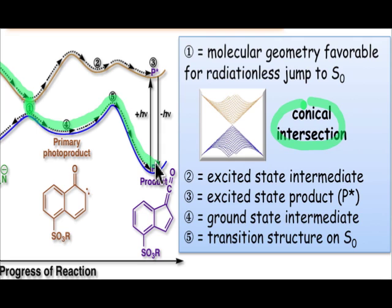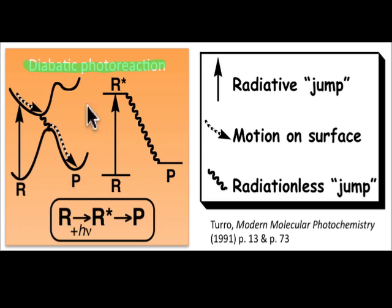So in the diabatic photoreaction, the molecule absorbs light, changes to the excited state configuration, and then at some point crosses back over to the ground state and generates the product in its ground state.